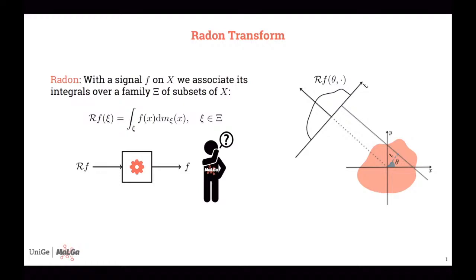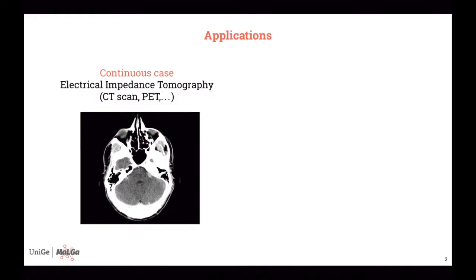This is very important in applications. The first and most famous application is computer tomography: when you have a CT scan, the machine has to reconstruct the image of a section of the human body knowing only one-dimensional information — namely the energy lost by each X-ray shot through the body. The machine uses a reconstruction of the Radon transform in order to obtain the image we are looking for.